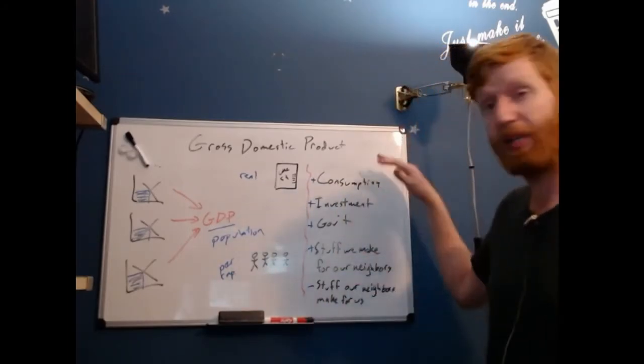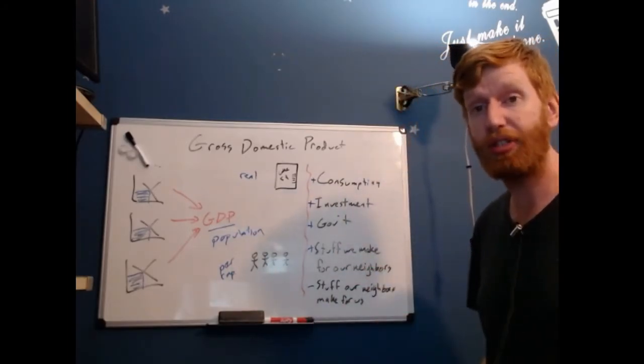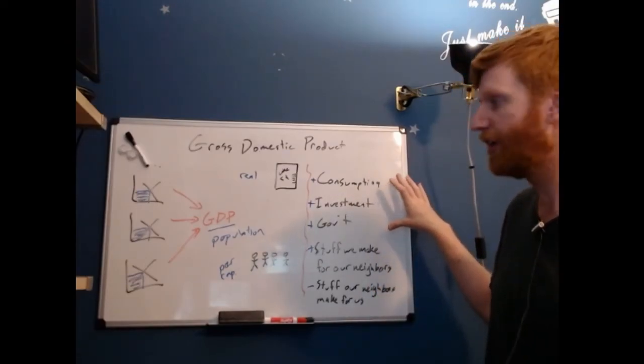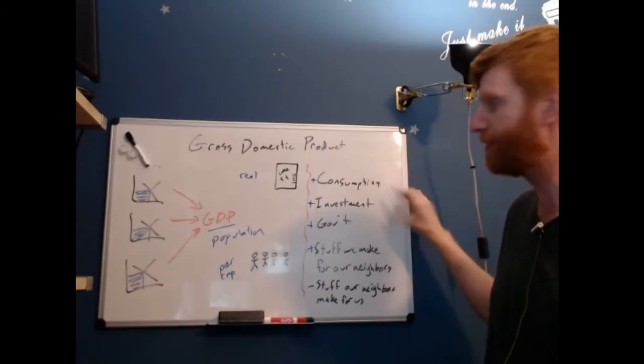One way we're going to split this up to ask questions in the macroeconomic context is our accounting equation. We split GDP up into a few different components.